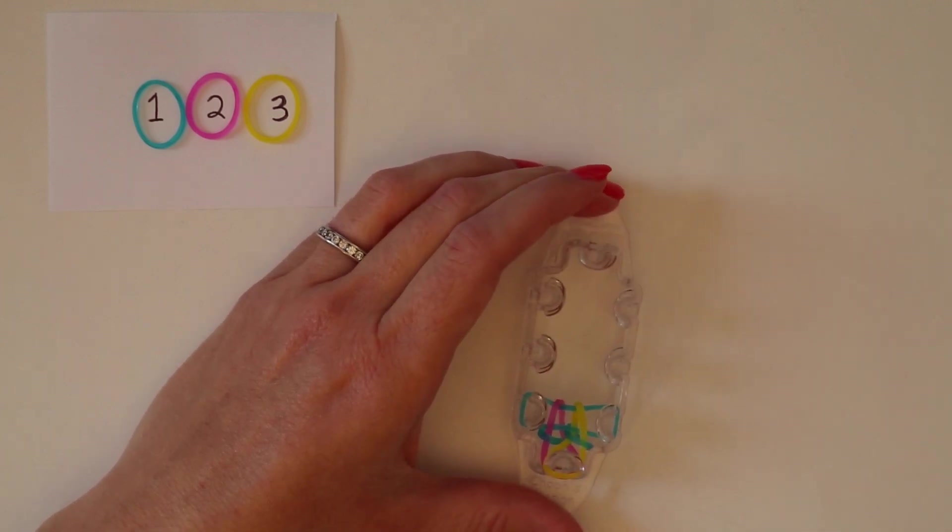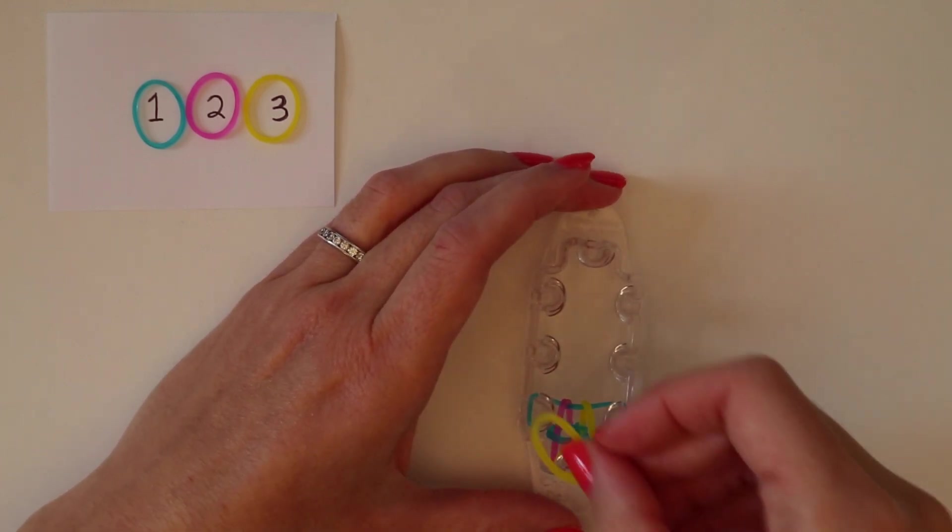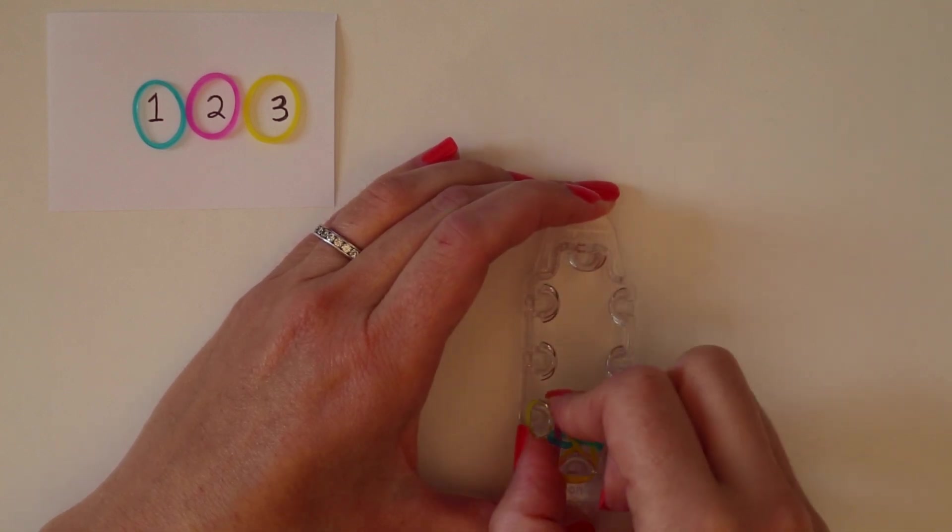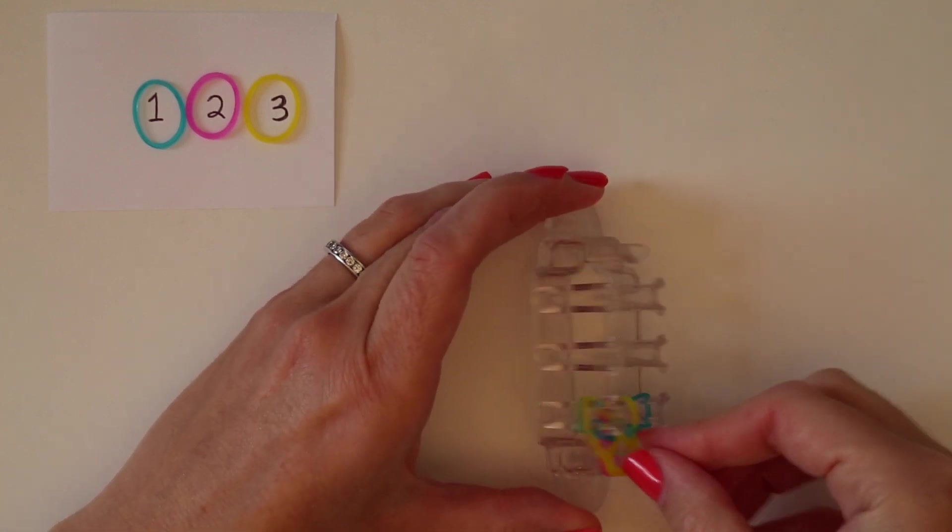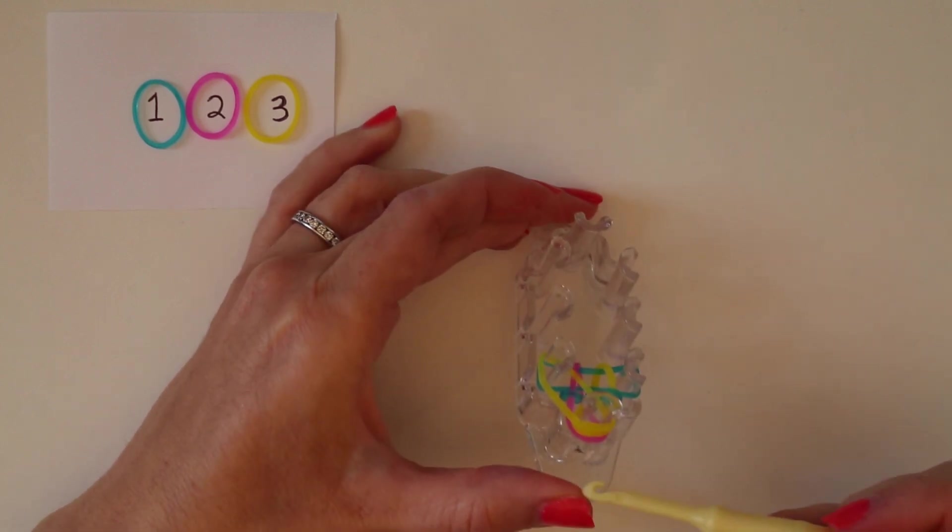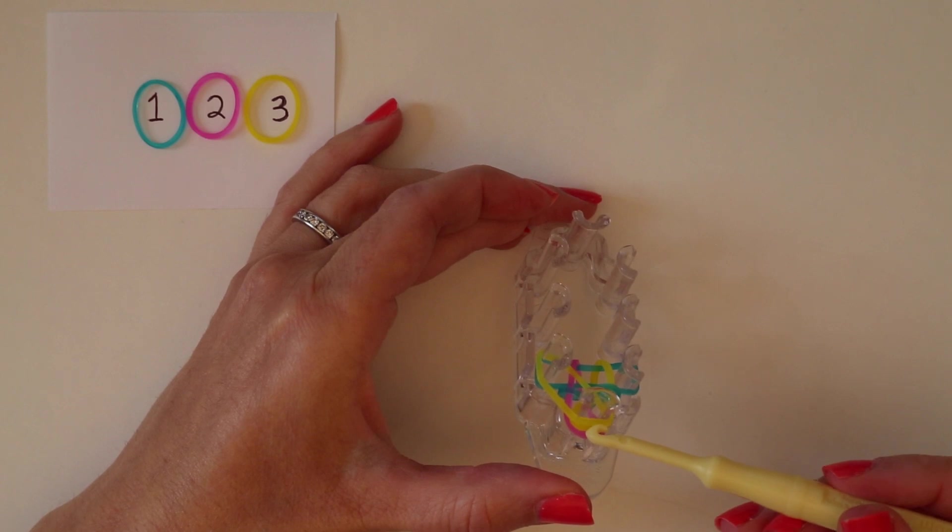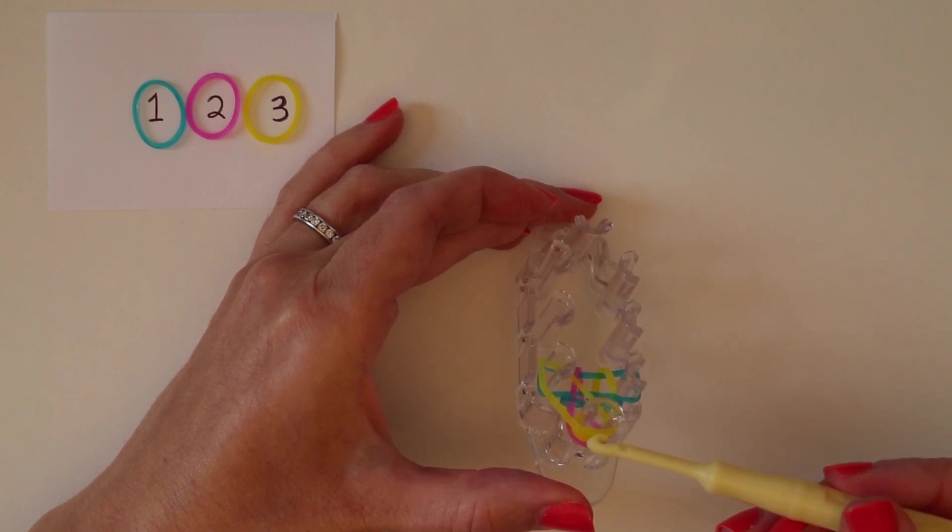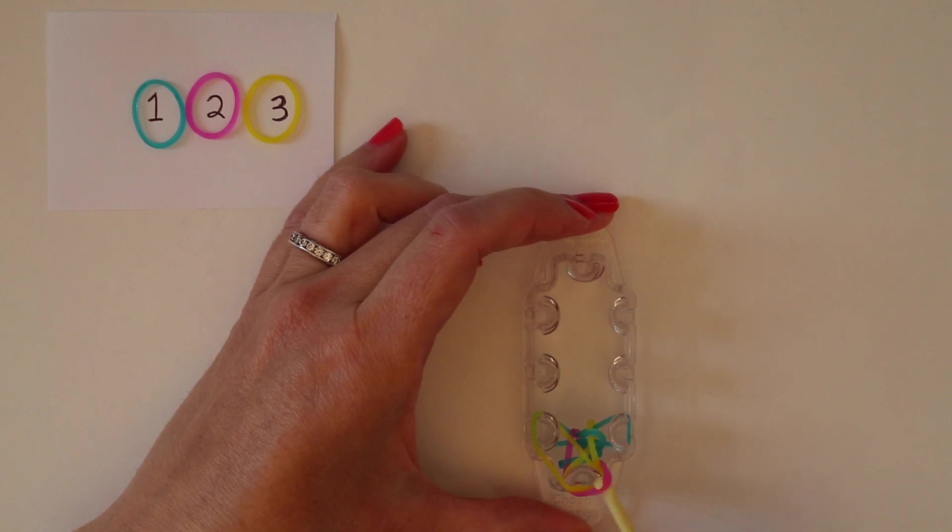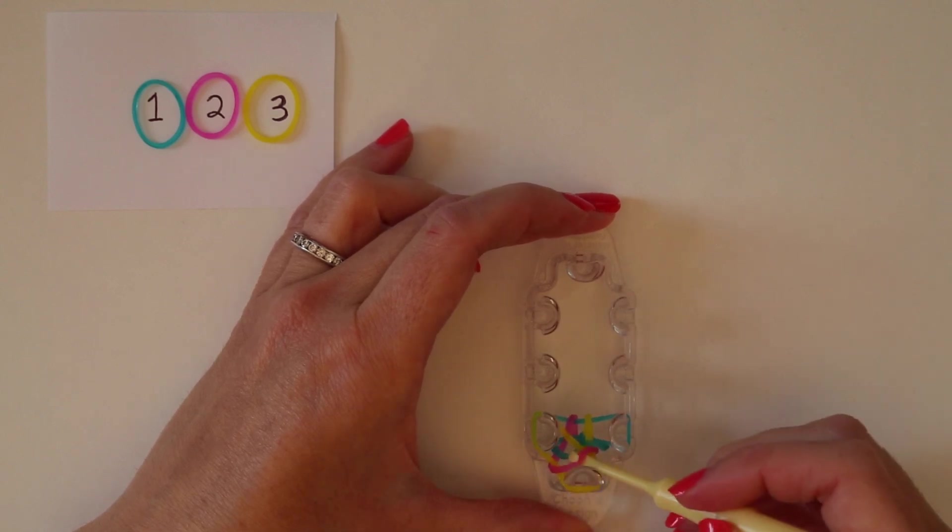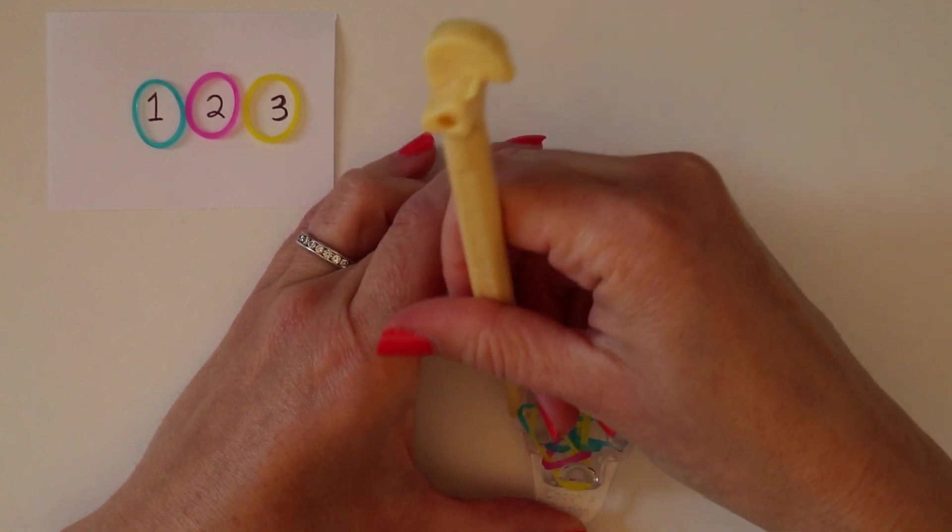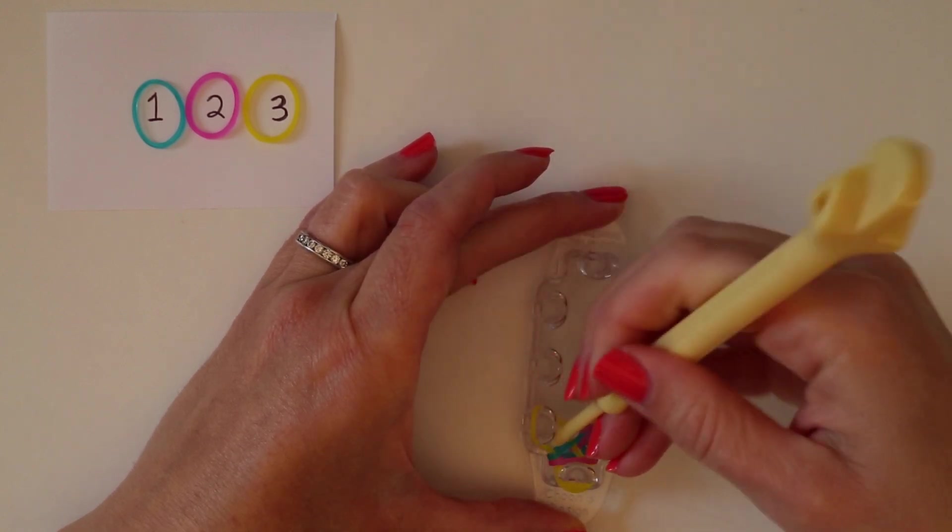Now, we're going to take another color three band and place it across the left side. So, you'll see now you have color one and color three, and color two, color three, and a second color three. And we're going to bring the bottom band up and over, and the bottom band up and over here.